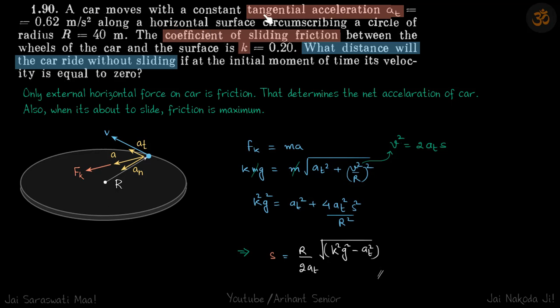We have a car moving with a constant tangential acceleration at, traveling on a circular path of radius r. The coefficient of friction is k. We need to find what distance it can travel without sliding.